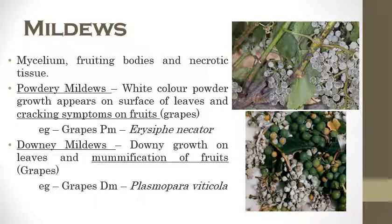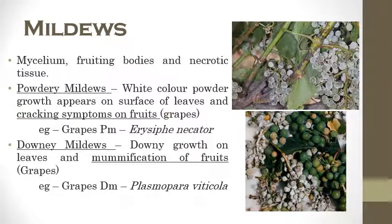The next one is mildews. Fungal mildew diseases are of two types: powdery mildews and downy mildews. In powdery mildews, white color powdery growth appears on leaves as well as fruits. The most diagnostic and prominent symptom of grapes powdery mildew is cracking symptoms on fruits. Grapes powdery mildew is caused by Erysiphe necator — the old name being Uncinula necator.